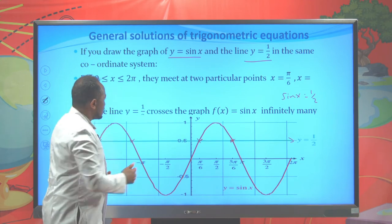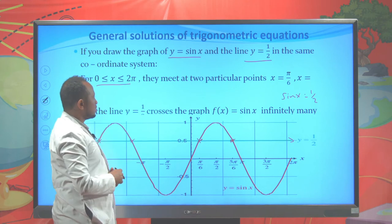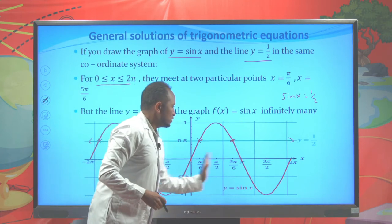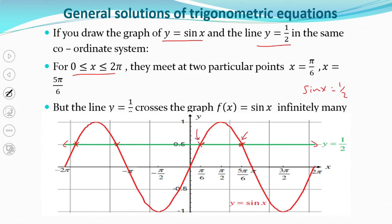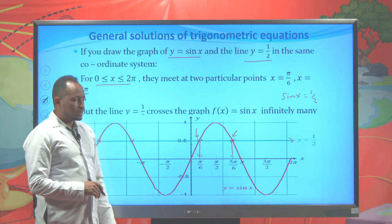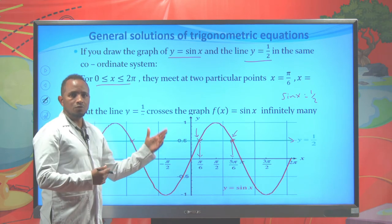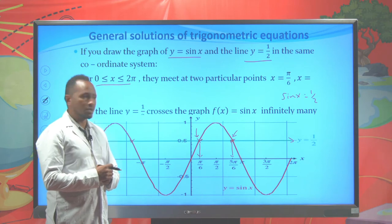For the interval from 0 to 2π, there are two intersection points at π/6 and 5π/6. These two are the particular solutions for sin(x) = 1/2 on [0, 2π]. But the general solution has infinitely many solutions, so we will see how to determine the general solution.